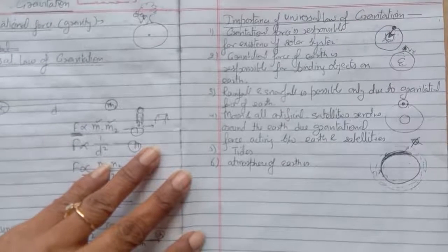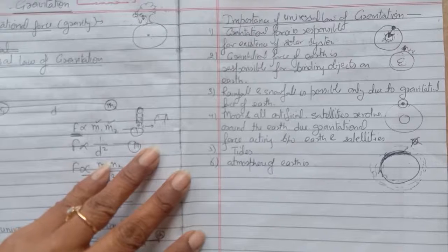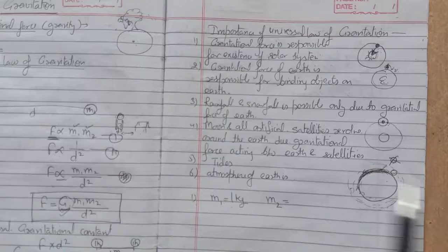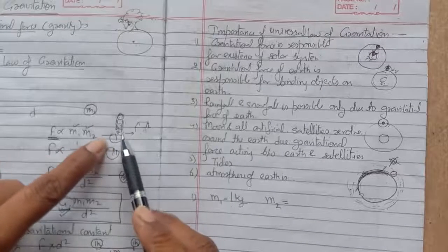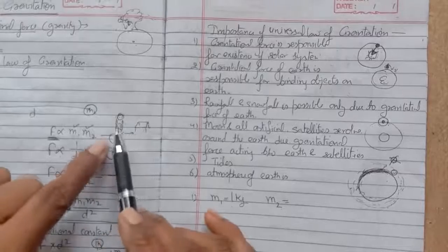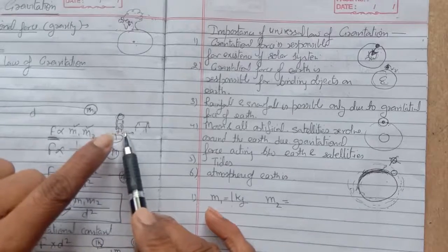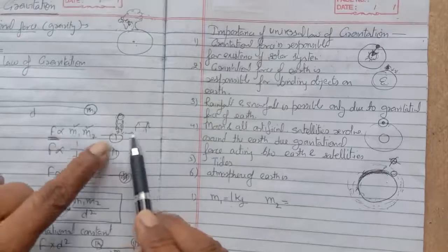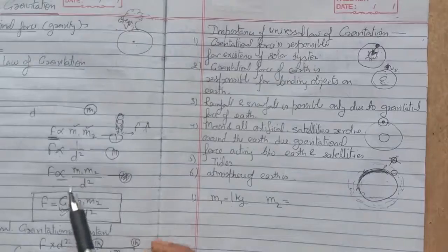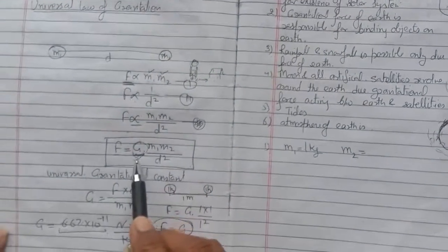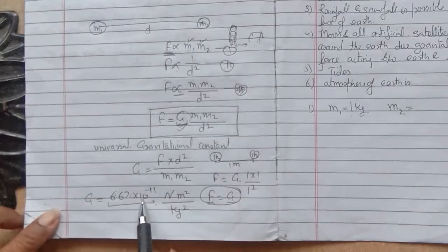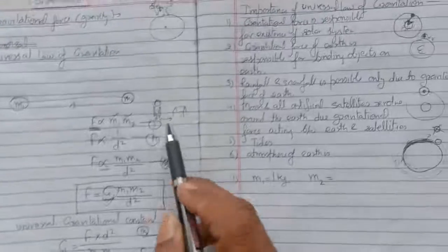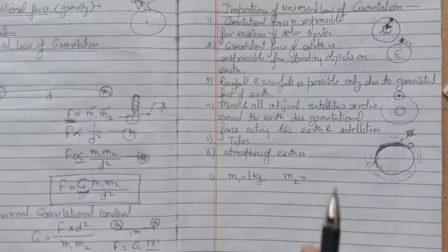A question that can arise in your mind: why are we not able to feel the force acting between us and other objects? Though we have some force, we cannot feel it because the mass of you and the object is not enough — it is very small. Also, the value of G is very small — 6.67×10⁻¹¹ — which is a very small quantity. So we are not able to feel the force acting between you and other objects.